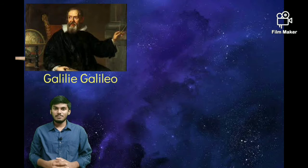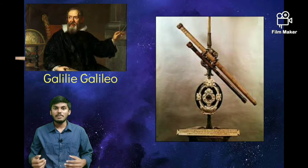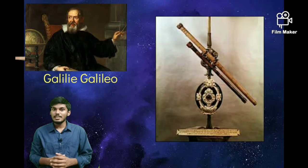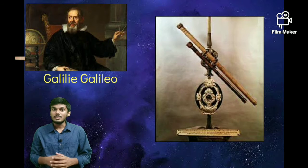When Galileo heard about the invention of the telescope, he designed his own telescope giving a magnification of 20x or 20 times. He was the first person in the world to turn his telescope towards the sky.